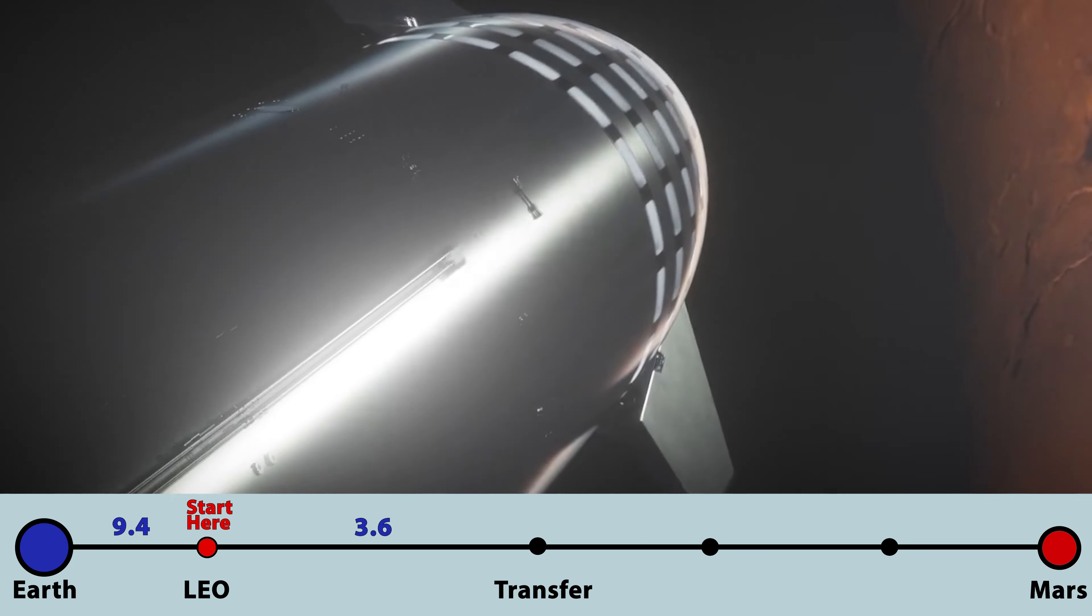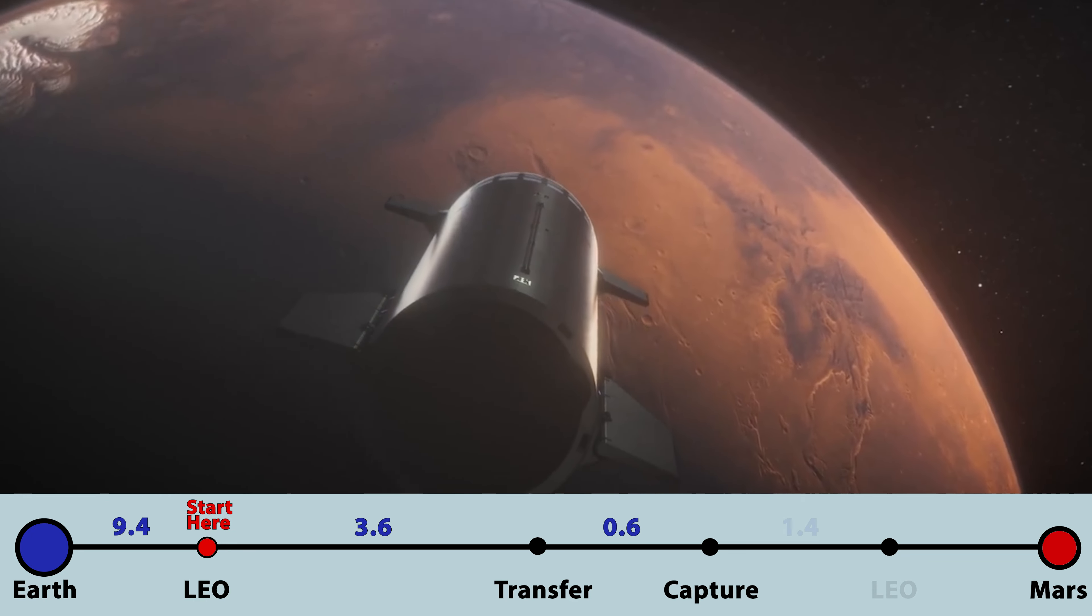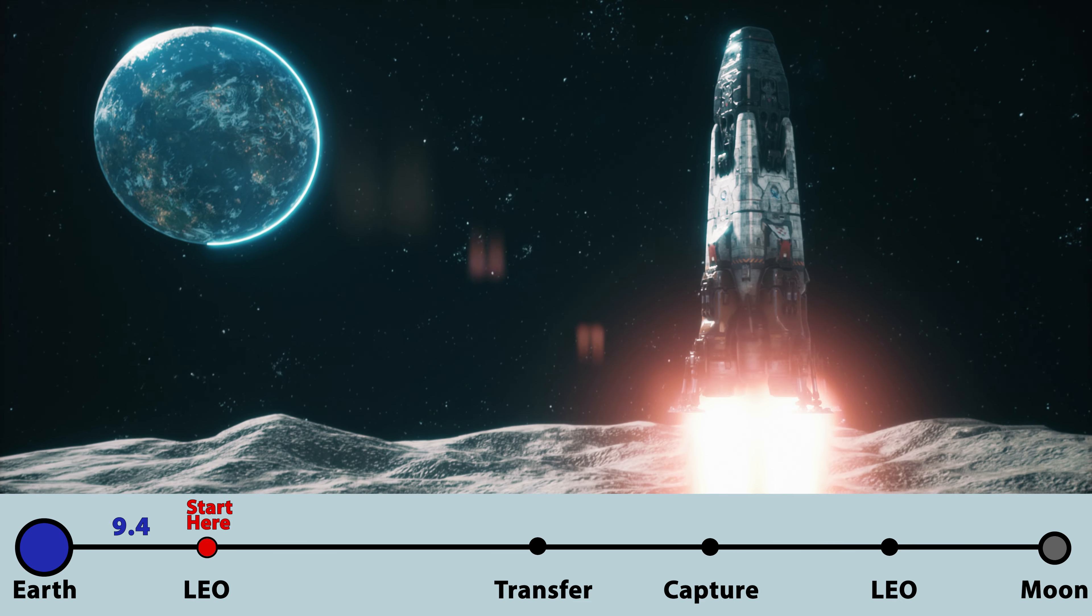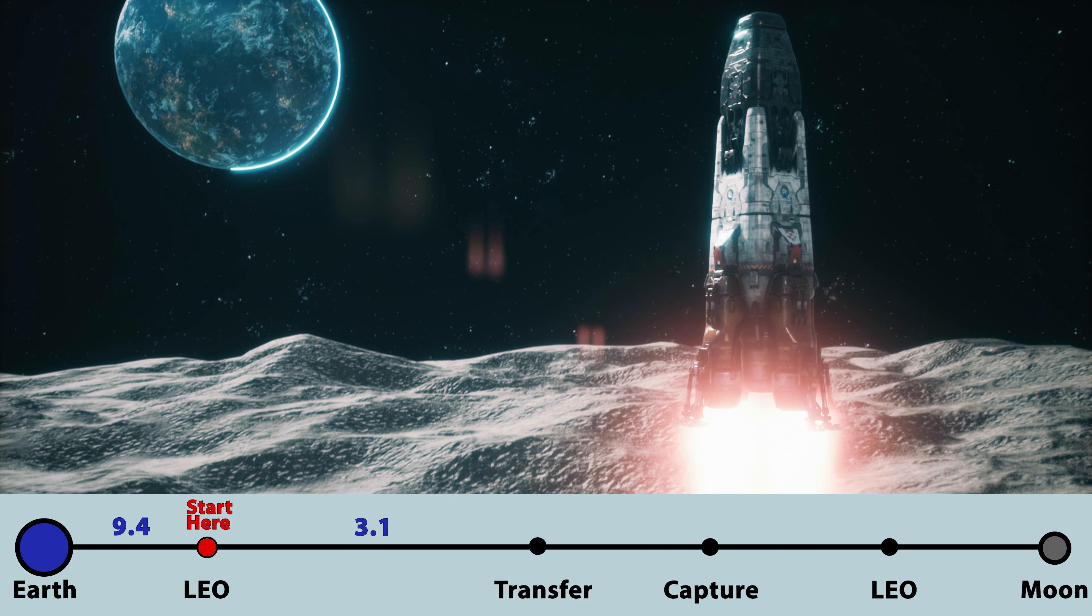From low Earth orbit, it takes 3.6 kilometers per second to get on a 9-month trajectory toward Mars, and on arrival, another 6 kilometers per second to capture into orbit, lower the orbit, and land softly on the surface.